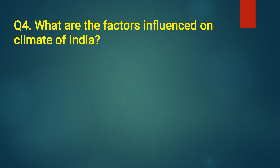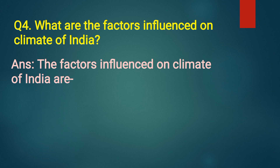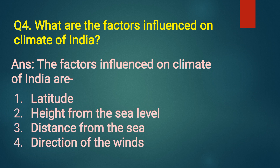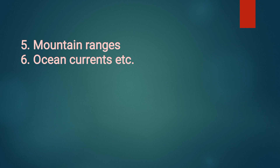Fourth question: what are the factors that influence the climate of India? Answer: the factors are — first, latitude; second, height from the sea level; third, distance from the sea; fourth, direction of the winds; fifth, mountain ranges; sixth, ocean currents, etc. So these are the factors influencing the climate of India.